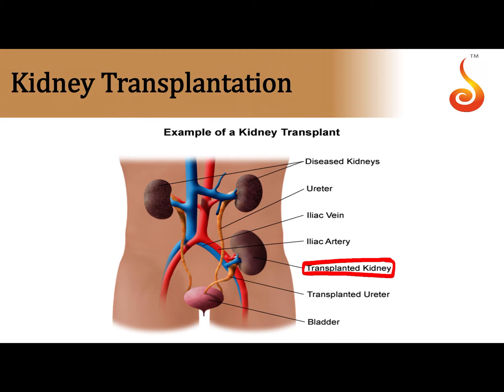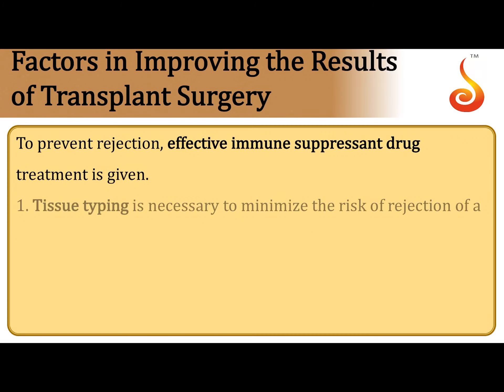A lot goes into deciding how to carry out kidney transplantation. The recipient is receiving the kidney from a donor, and the recipient's immune system is going to recognize it as a foreign organ. Therefore, the recipient must receive immune suppressants such as cyclosporine. This treatment has to go on for months to suppress the immune system so it does not mount a response against the donor organ.